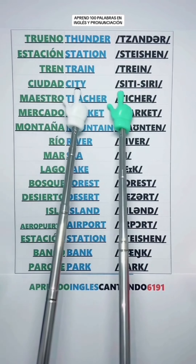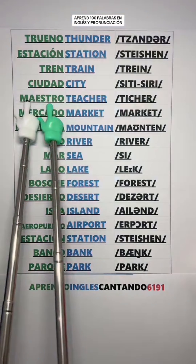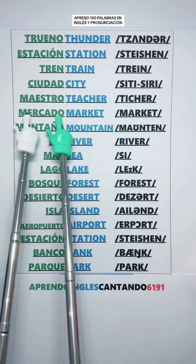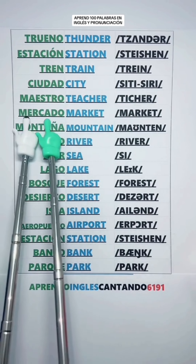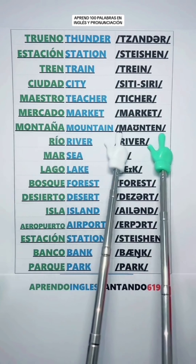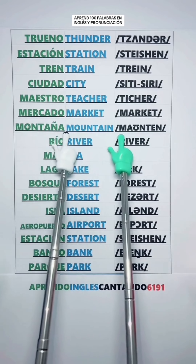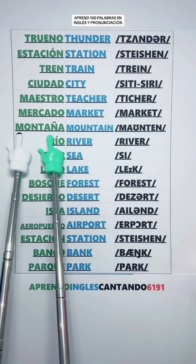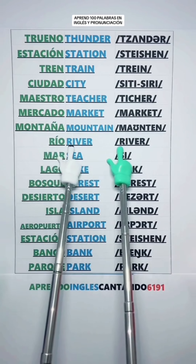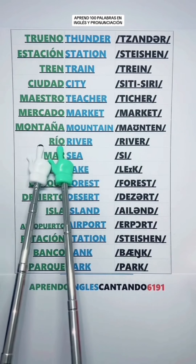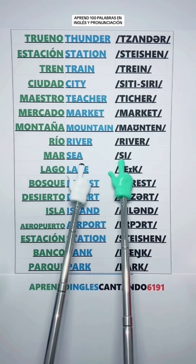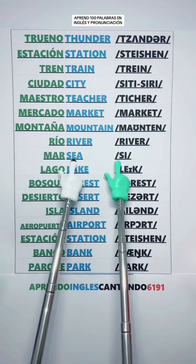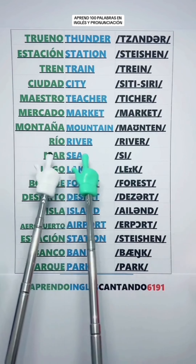Teacher — Maestro. Market — Mercado. Mountain — Montaña. River — Río. Sea — Mar.